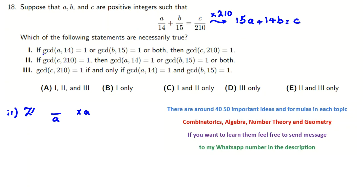Now, let's read the statements. It says if GCD of A and 14 is 1, or B and 15 is 1, or both, then GCD of C and 210 is 1. There are statements that, so let me explain first.